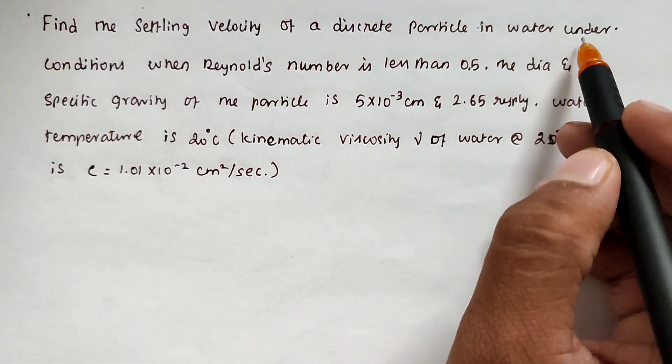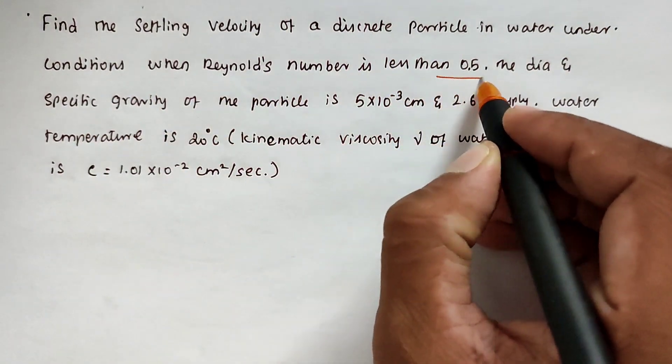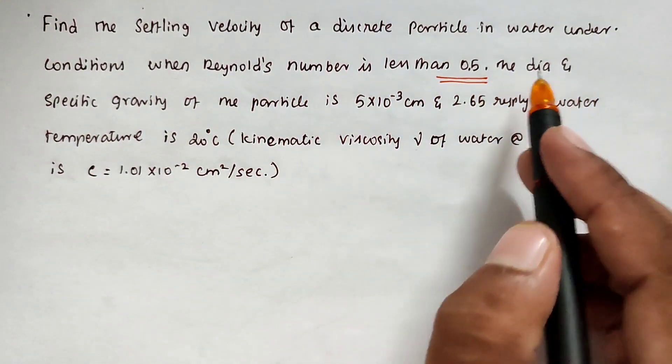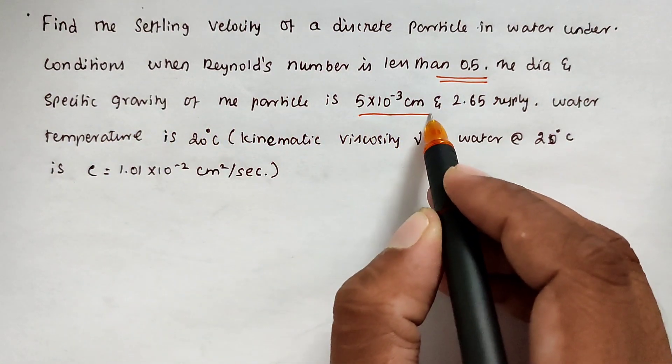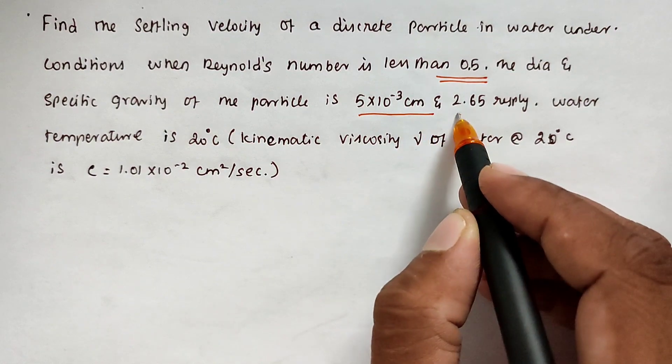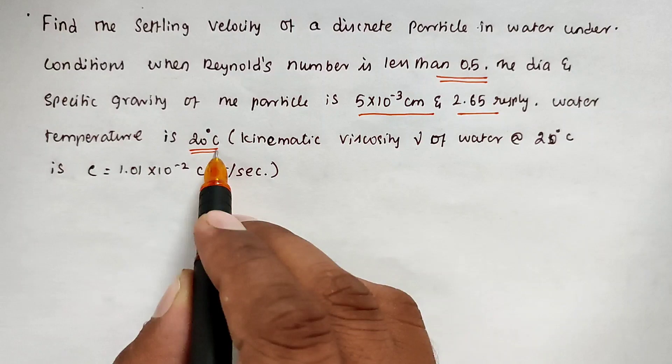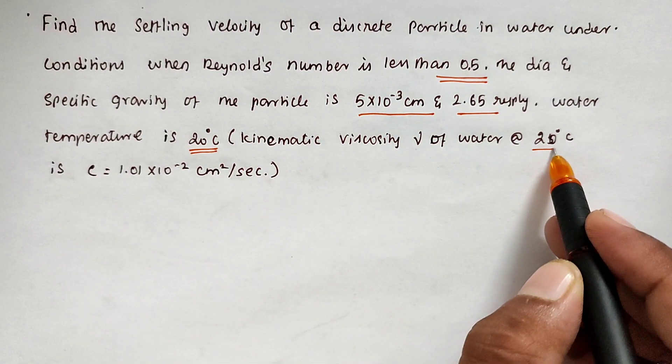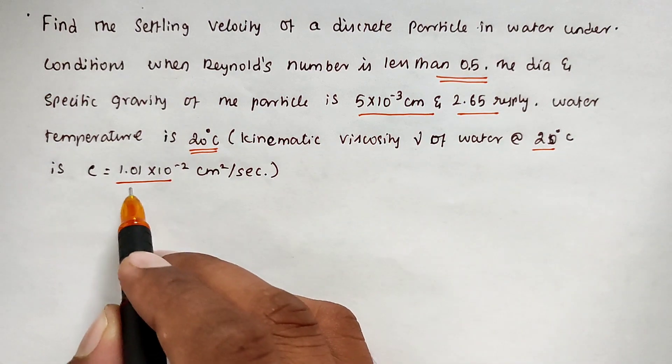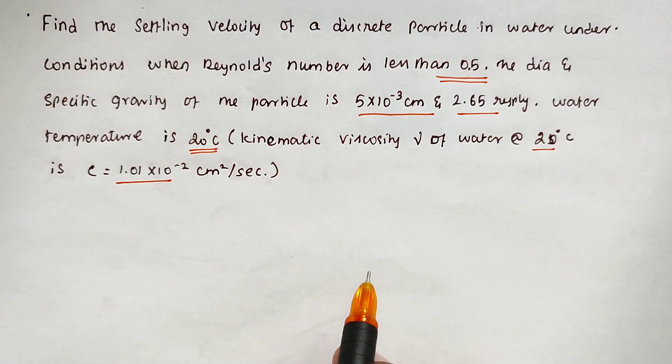of a discrete particle in water under conditions when Reynolds number is less than 0.5. The diameter and specific gravity of the particle is 5×10^-3 cm and 2.65 respectively. Water temperature is 20°C. Kinematic viscosity of water at 20°C is ν = 1.01×10^-2 cm²/sec. These are all the given values and we need to find the settling velocity.